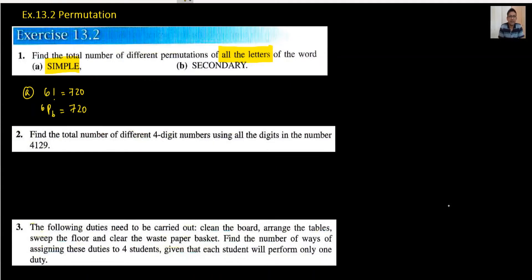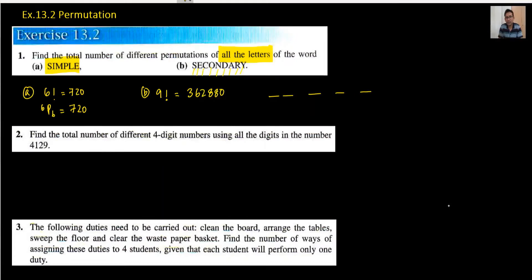For part b, all the letters are used again. Counting them: 1, 2, 3, 4, 5, 6, 7, 8, 9. So 9 factorial, or 9 P 9, equals 362,880. There are possibilities where we can write the secondary alphabets in different positions — we have 9 positions — so we can write those letters anywhere among those positions.